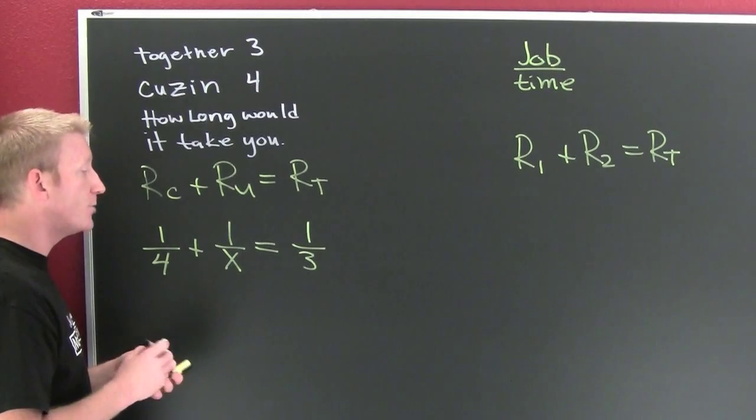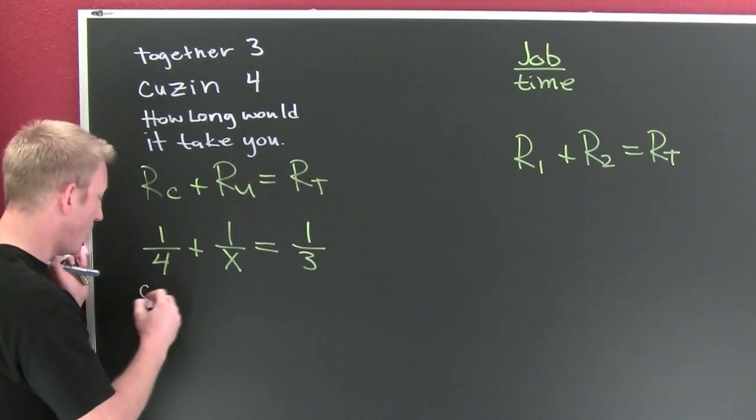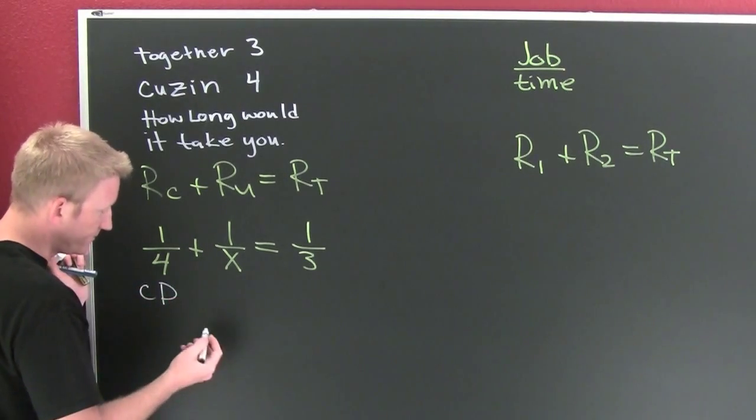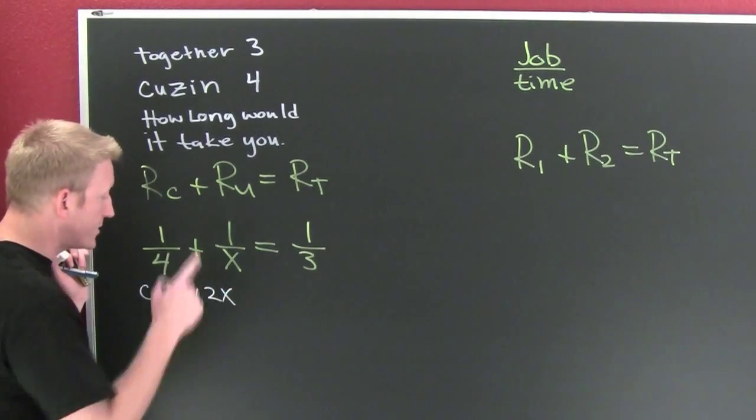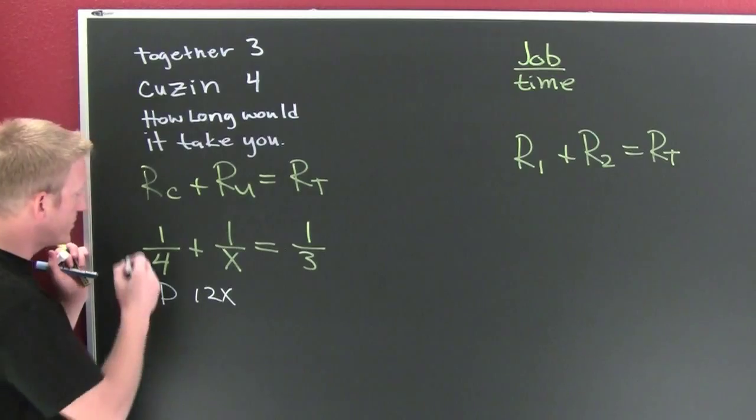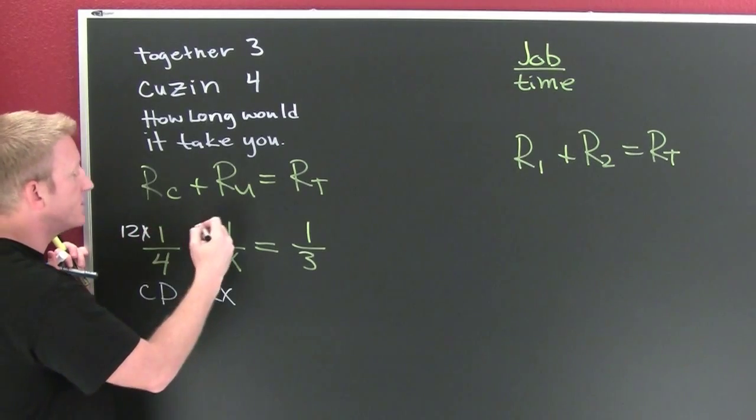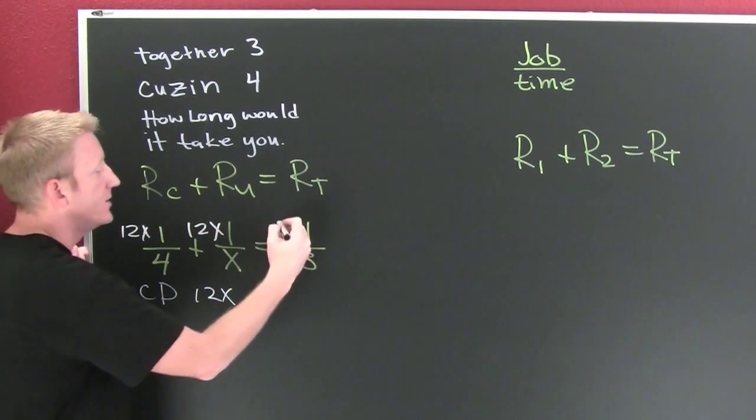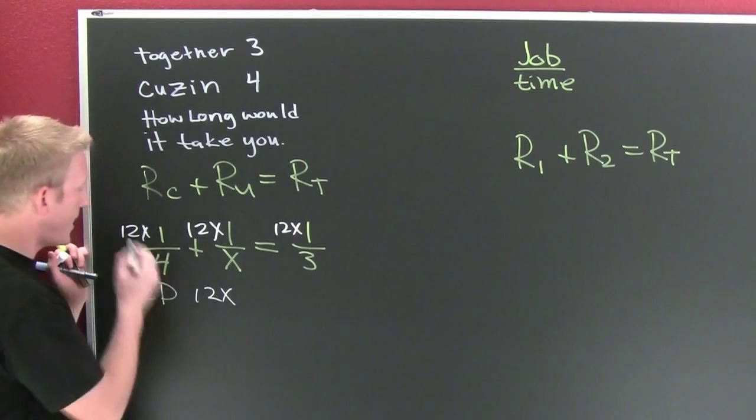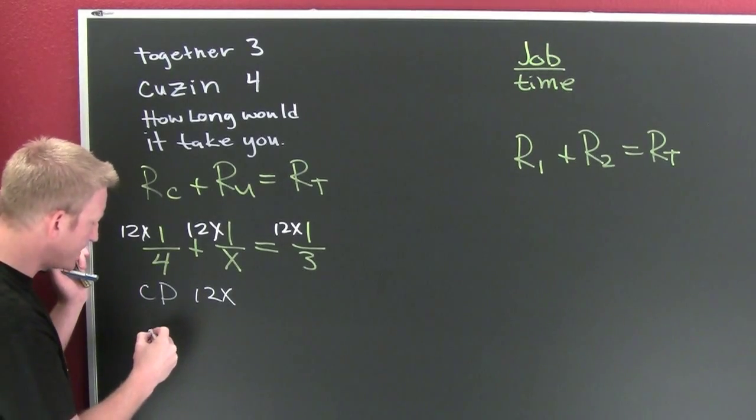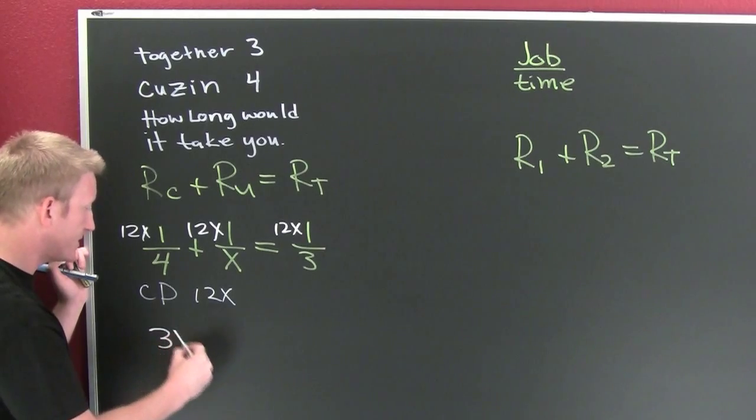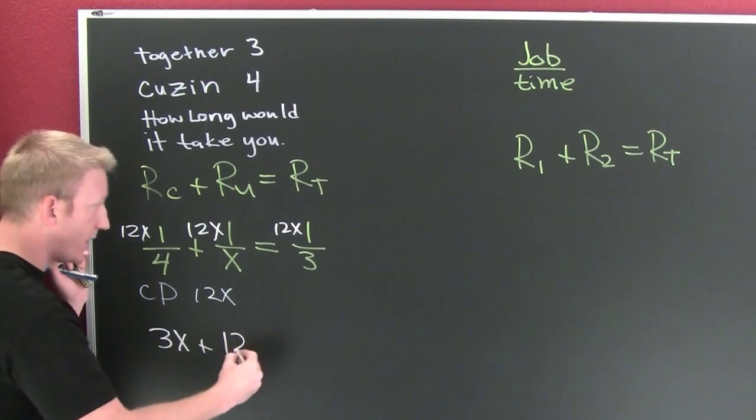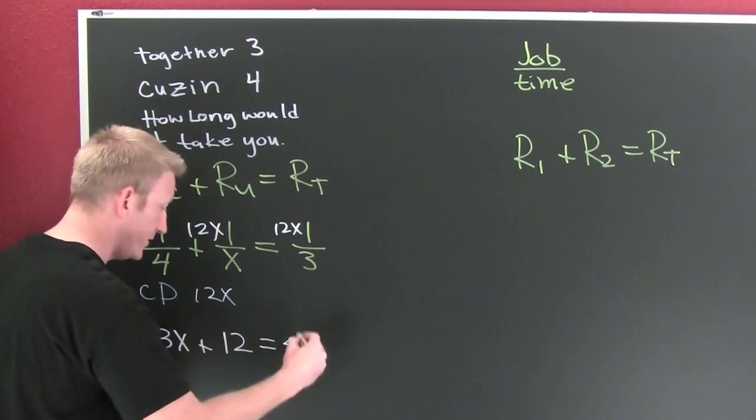So then I've got to multiply by the common denominator. What would a common denominator be if you had one? 12X. Yeah. So I'm going to multiply each one of those terms by 12X, by 12X, by 12X. Reduce. They fight. Well, if I was working with my cousin, I'd probably fight. 3X plus 12 is, wait for it, 4X.